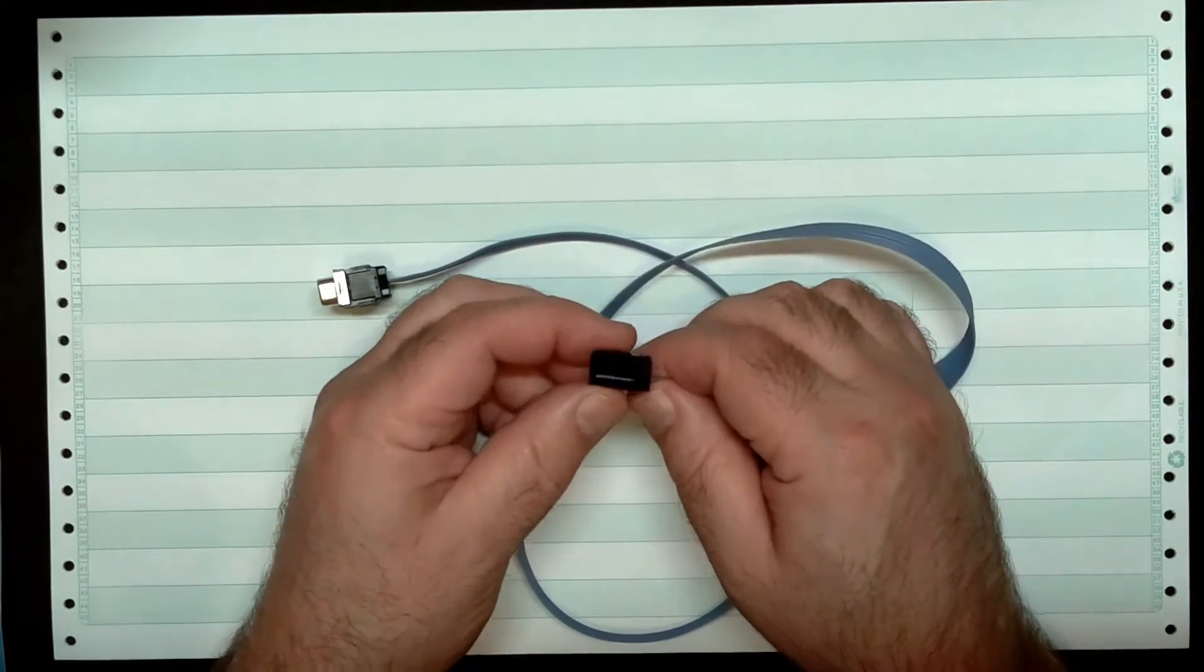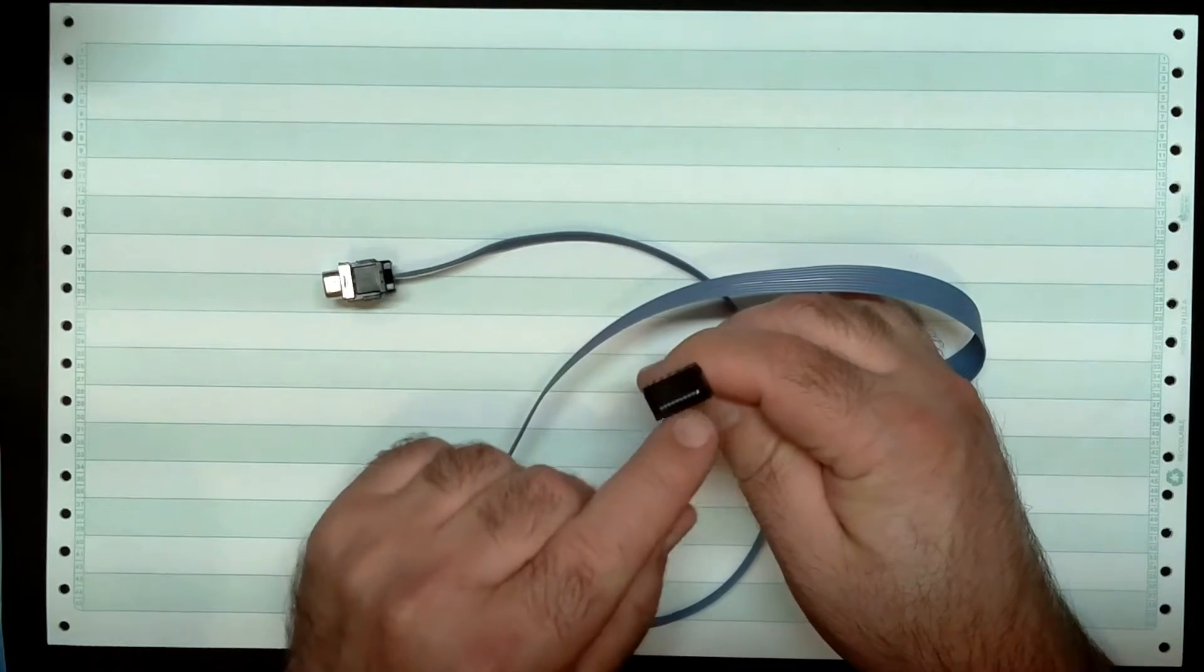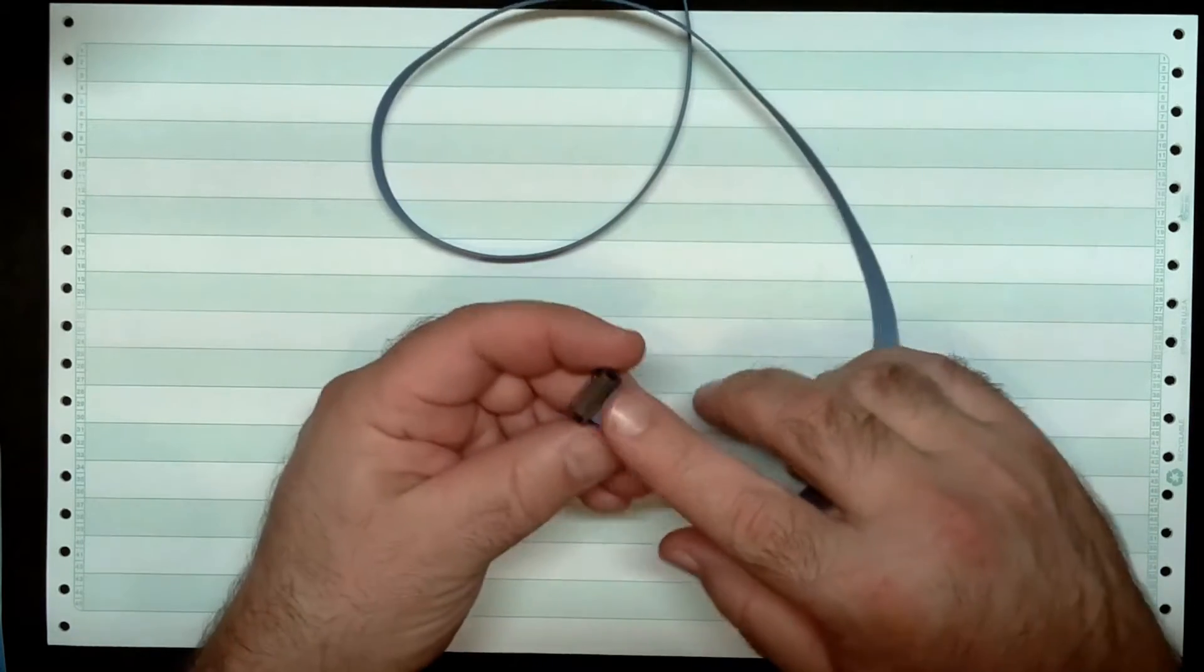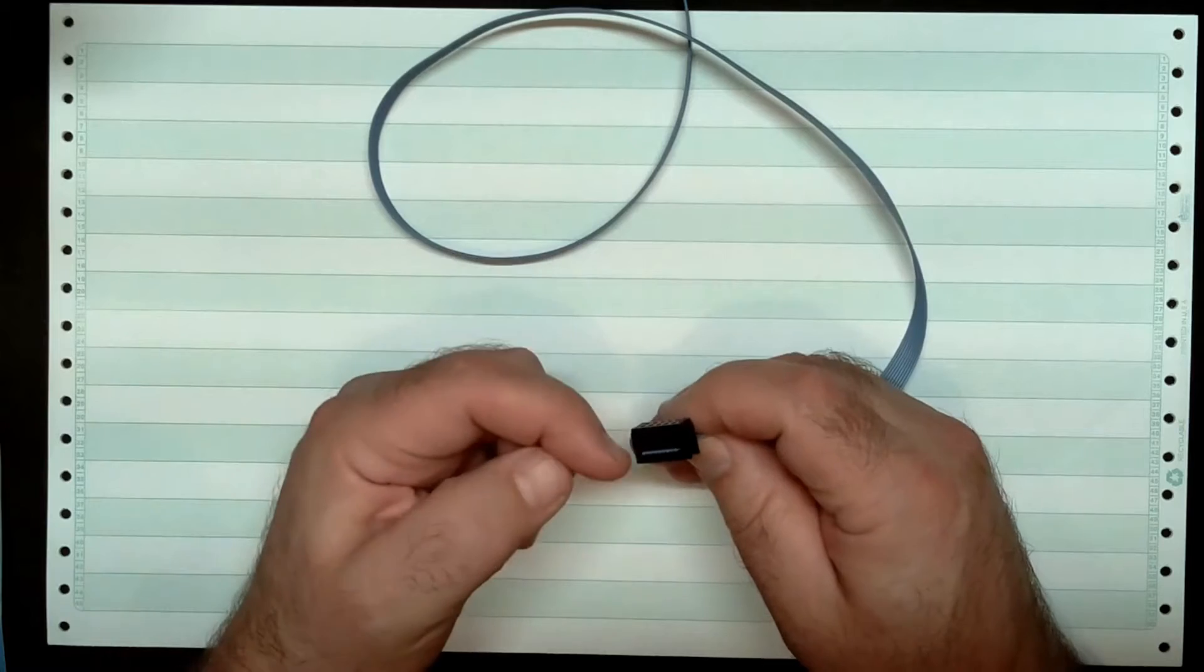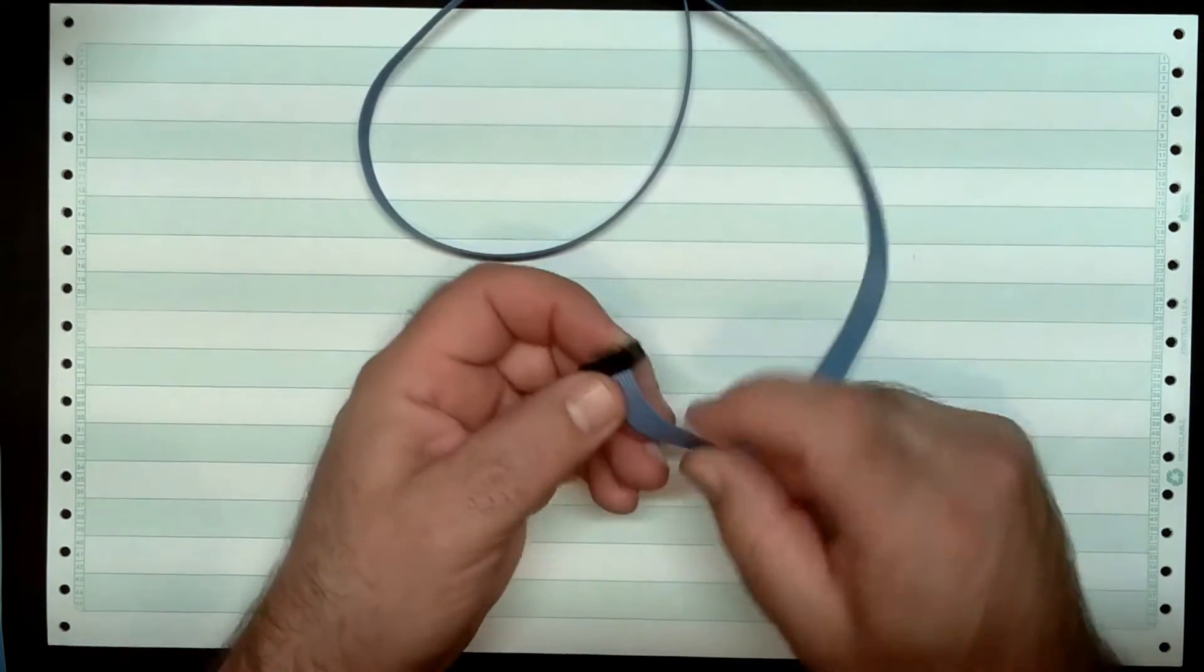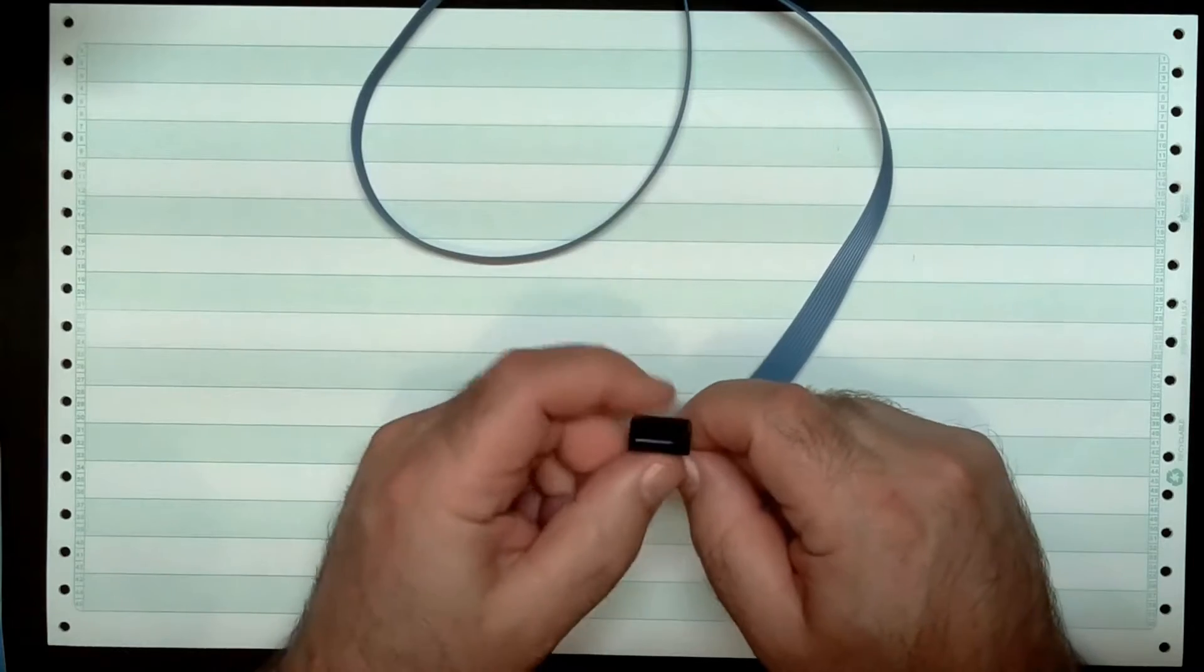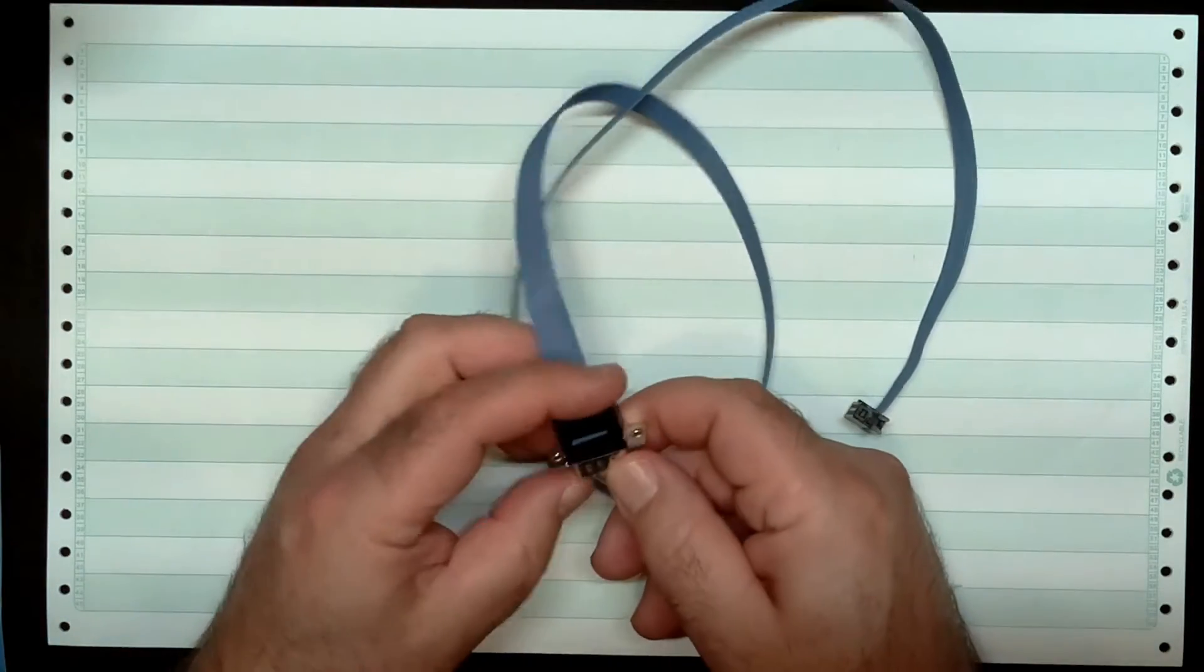Both of these are what we call insulation displacement connectors, which means they have little teeth inside. You slide in what we call a ribbon cable, slide it into the connector, and then you squeeze the connector closed and a bunch of little teeth, like vampire teeth, reach in and come in contact with the little metal wires inside the rubber insulation. Therefore, it is an insulation displacement connector. Both ends have the same arrangement.